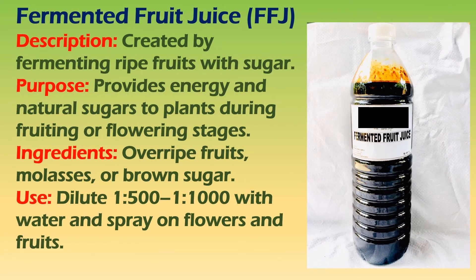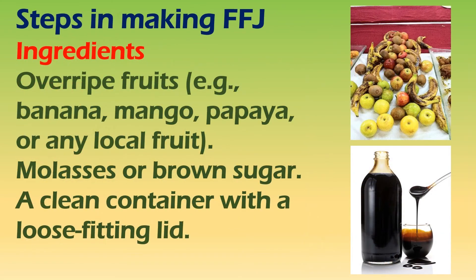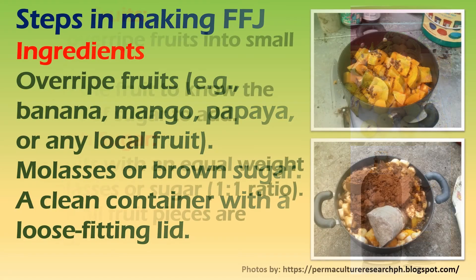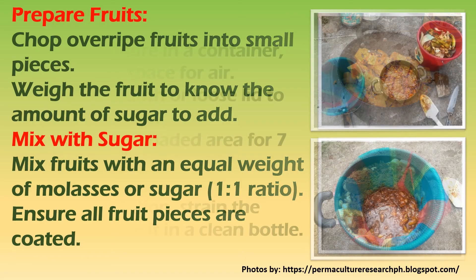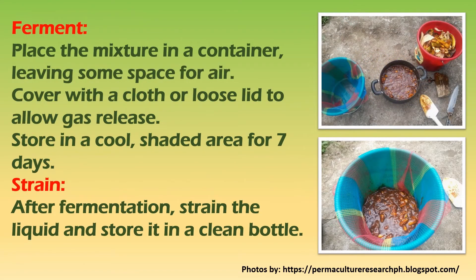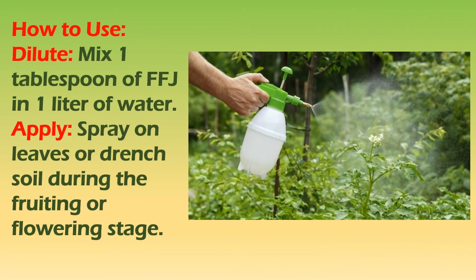Fermented Fruit Juice (FFJ) is made by fermenting overripe fruits with molasses or brown sugar. It provides plants with energy and natural sugars, especially during the fruiting or flowering stages. Dilute 1:500 to 1:1,000 with water and spray directly on flowers and fruits for better growth and yield. To make FFJ: collect overripe fruits and chop them into small pieces. Place them in a clean container and add molasses or brown sugar in a 1:1 ratio. Mix well, cover, and let it ferment for 7 to 10 days, stirring occasionally. Once fermented, strain the liquid and dilute 1:500 to 1:1,000, then spray on your plants' flowers and fruits to boost growth.